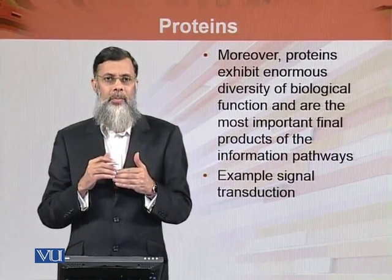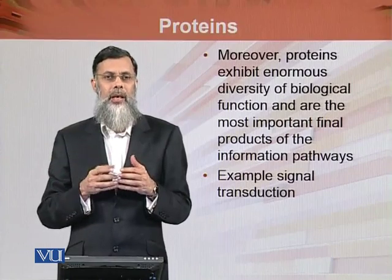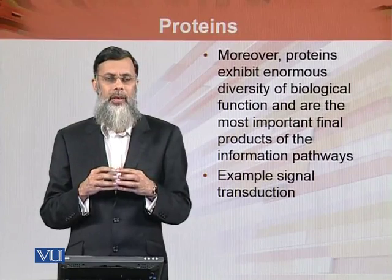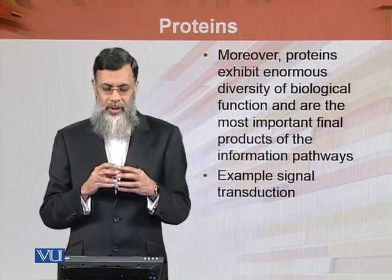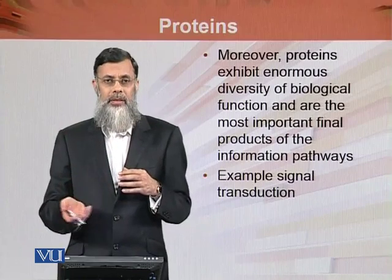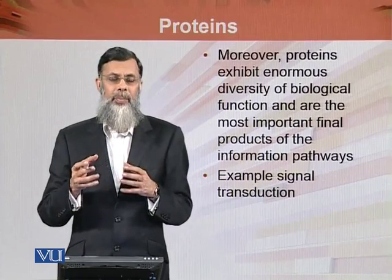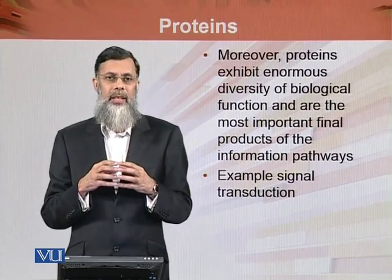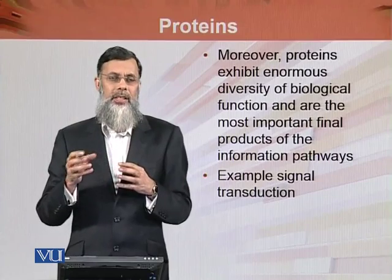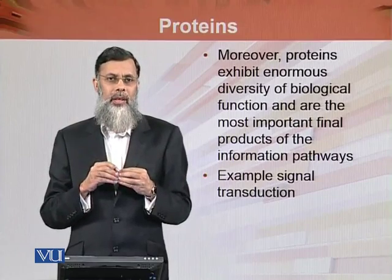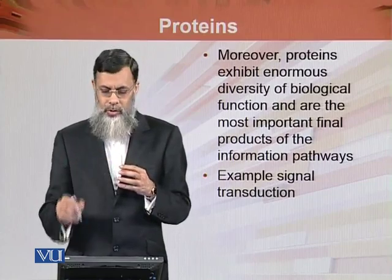The final product of the information pathway is translation — the production of a protein from a particular type of gene. Another example is signal transduction, where a particular signal comes and attaches to the cell membrane. This signal is in the form of a protein, and the receptor on which it acts is also a protein.